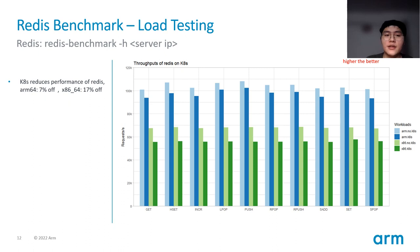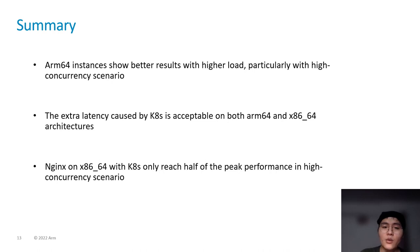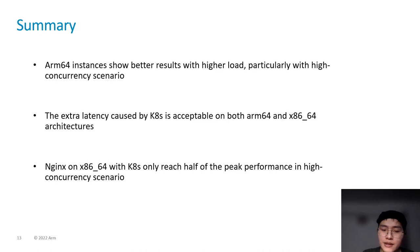The last workload test is about Redis testing. Redis benchmark tests functions of Redis such as GET and HSET. Kubernetes also reduces the performance of Redis — on ARM it is 7%, and on x86 it is 17%. In summary: ARM instances show better results under higher load, particularly in high-concurrency scenarios. The extra latency caused by Kubernetes is acceptable on both ARM and x86. The Nginx on x86 with Kubernetes only reaches half of the peak performance in high-concurrency scenarios. The next part will be presented by Dave.